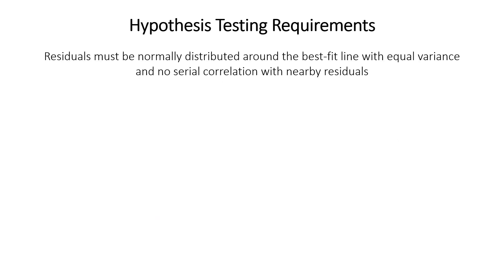There are a number of assumptions required for hypothesis testing in linear regression, and they have to do with the residuals. The residuals — the y-axis distance between each point and the fitted value on the line — must be normally distributed around the best fit line. That normal distribution must have equal variance all along the range, and there shouldn't be serial correlation between nearby residuals.